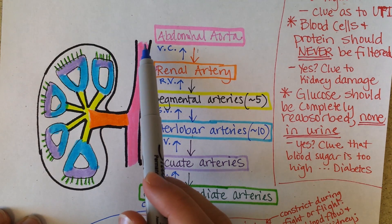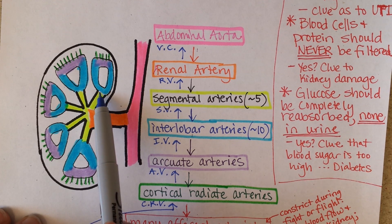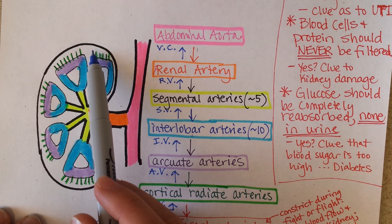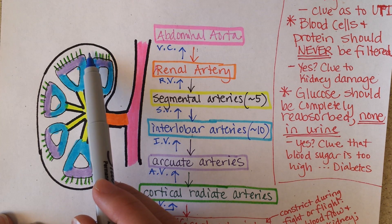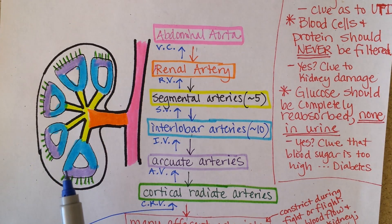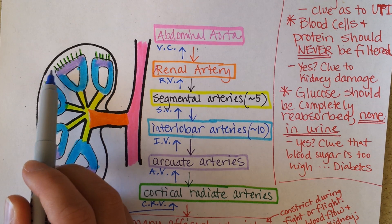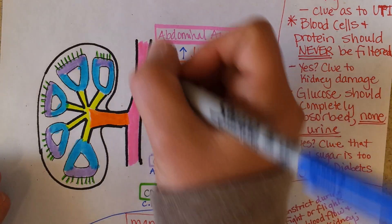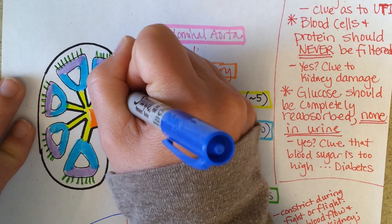So if you look at the kidney now — oxygenated blood filled with waste enters the kidney by the renal artery. It goes into the segmental arteries, up the interlobar arteries, up the arcuate arteries, out the cortical radiate arteries, and then into microscopic afferent arterioles to a glomerular capillary bed where filtration occurs. Anything not filtered goes into the efferent arteriole, then into the peritubular capillary bed where reabsorption occurs. Then blood returns through the cortical radiate veins, arcuate veins, interlobar veins, segmental veins, and renal veins back to the vena cava.